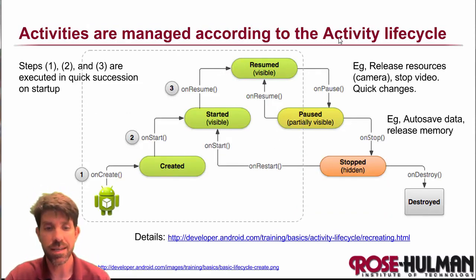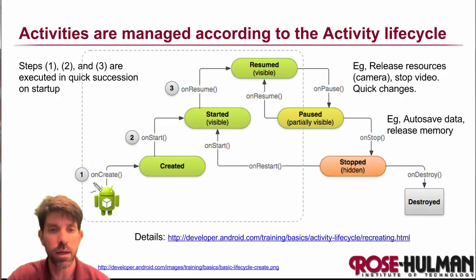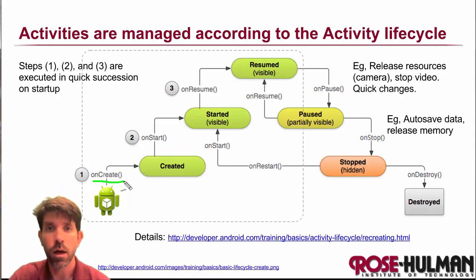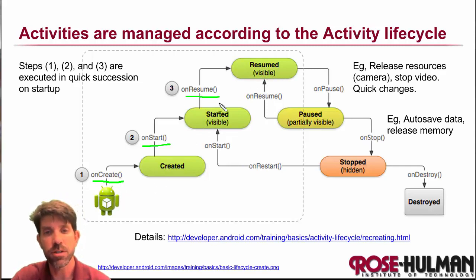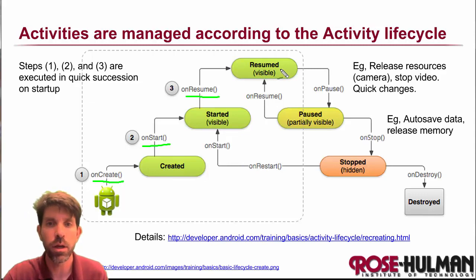We do need to know a little bit about the activity lifecycle for this to work. Whenever an app is made, we know that onCreate is called. But it's actually doing three things: it's creating it, starting it, and then resuming it. These correspond to different stages where it's made, then made visible, and brought to the foreground. Your app can actually be destroyed or partially destroyed over time so Android can manage its resources appropriately.